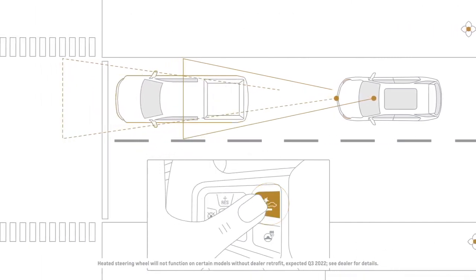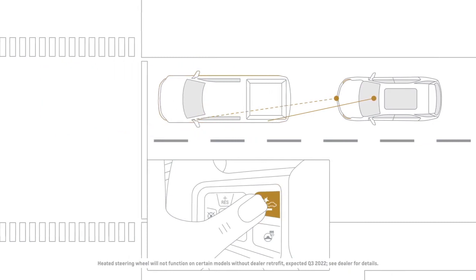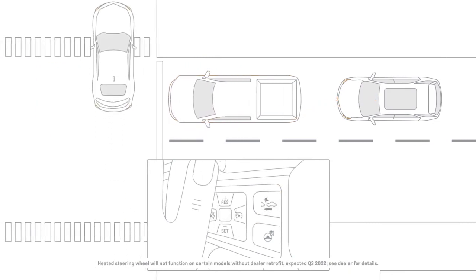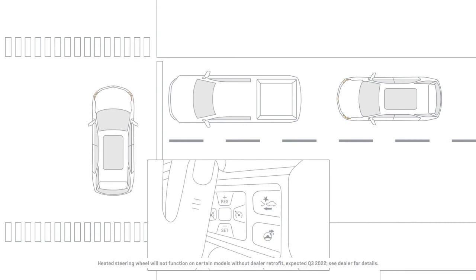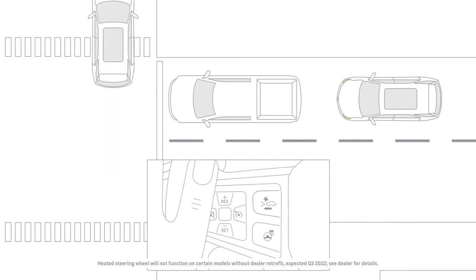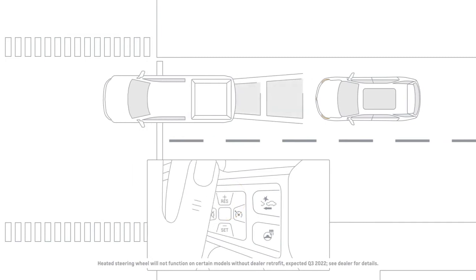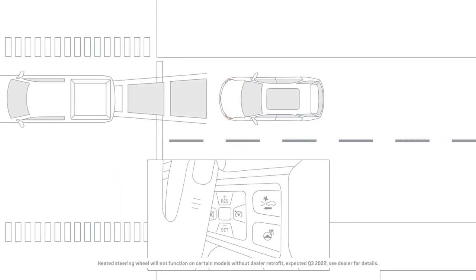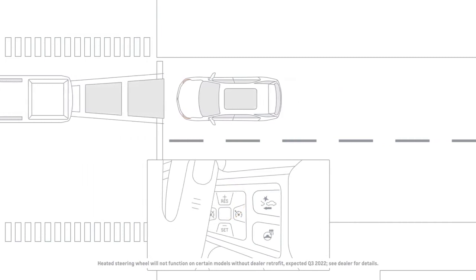Press and hold the Gap Setting button when the vehicle is stopped to cancel Adaptive Cruise Control from resuming automatically if the stop is brief and the vehicle remains stationary. This can be used to allow traffic to merge between you and the vehicle ahead. Then press the Resume or Plus button or the accelerator pedal to resume Adaptive Cruise Control.